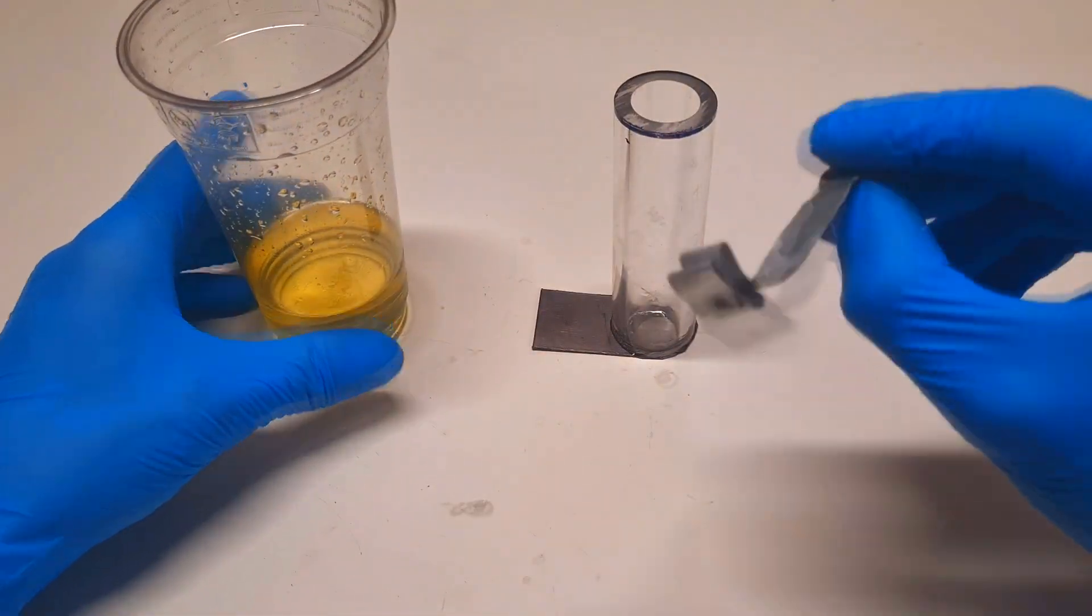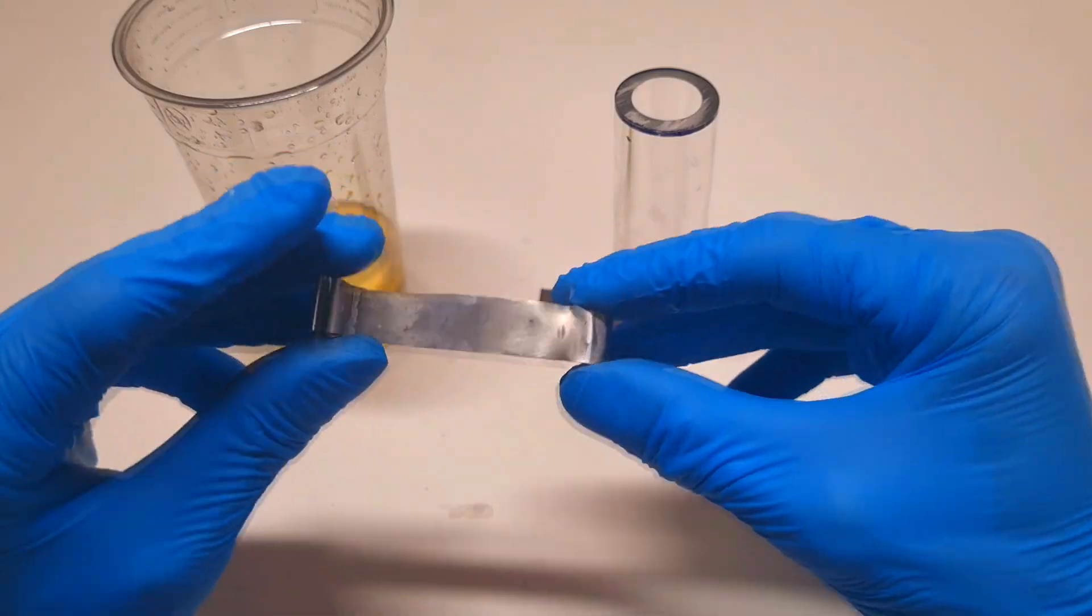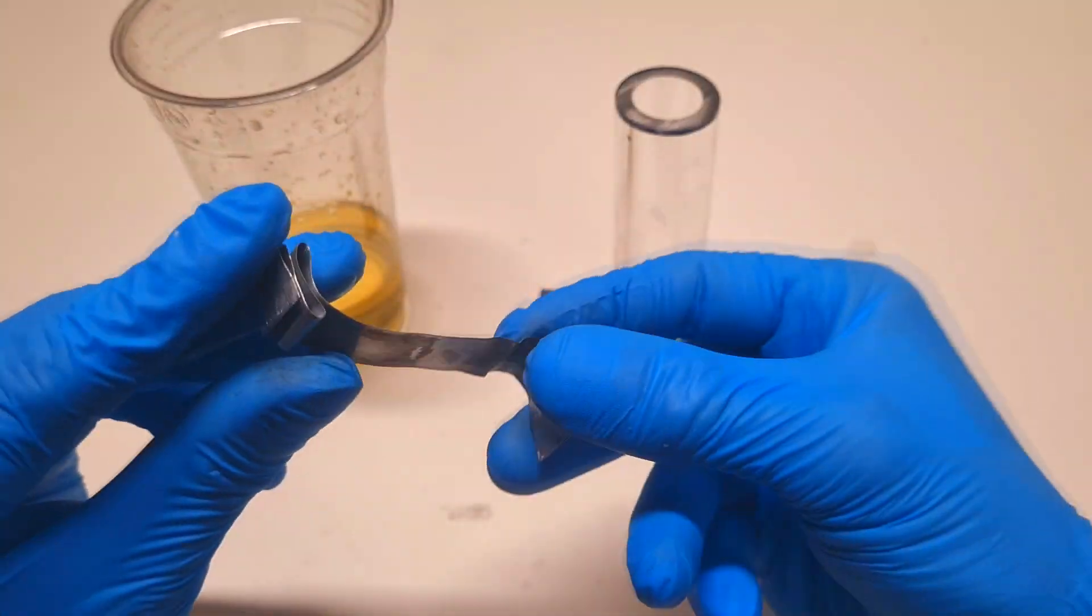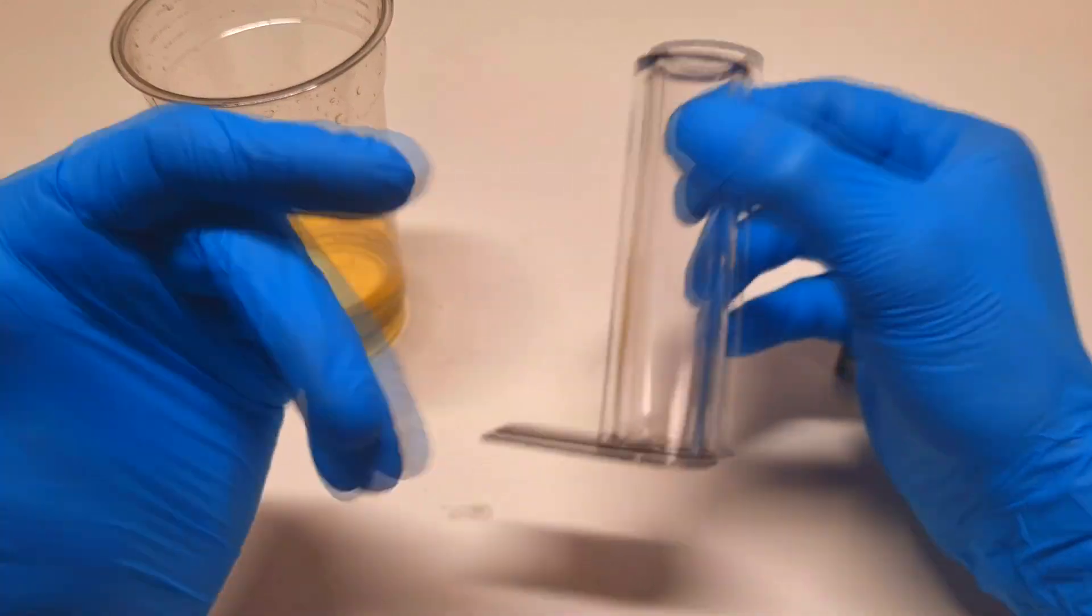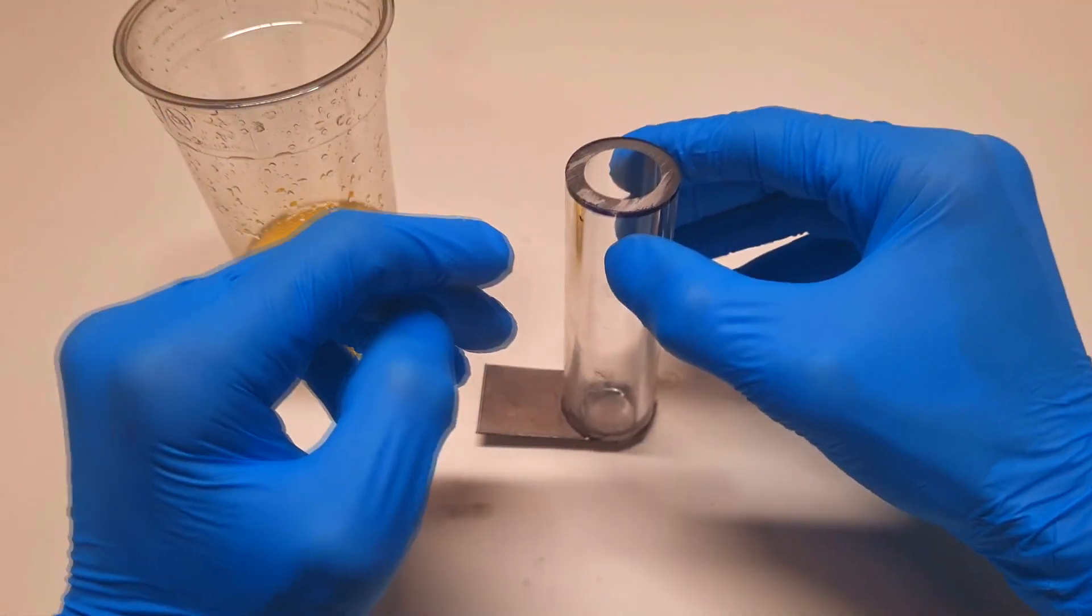And also over here I have the negative electrode, which is made from some zinc. Now this area I need to fill with some carbon material.